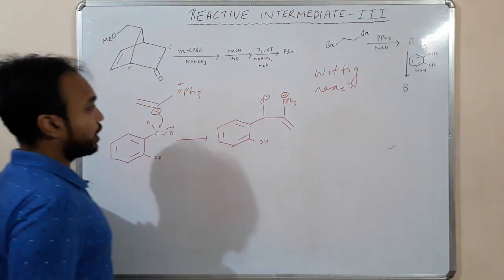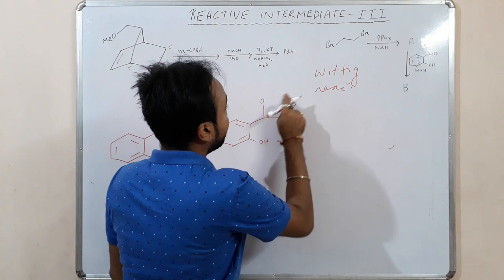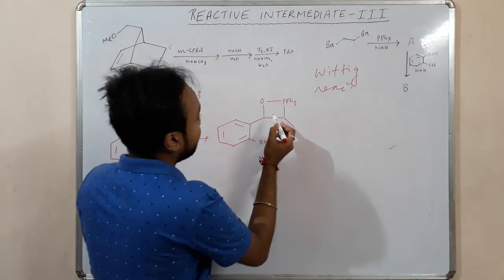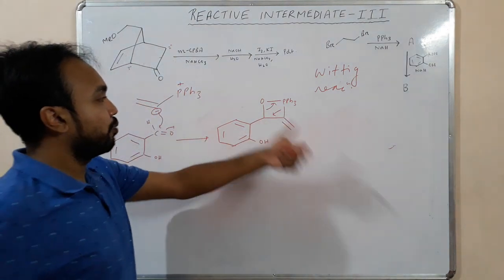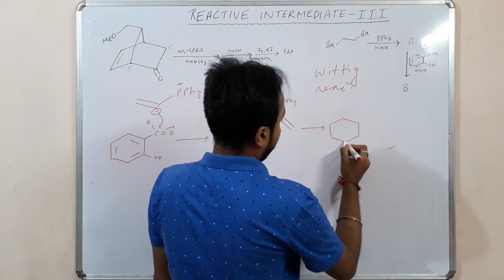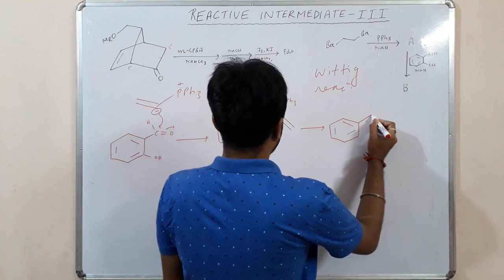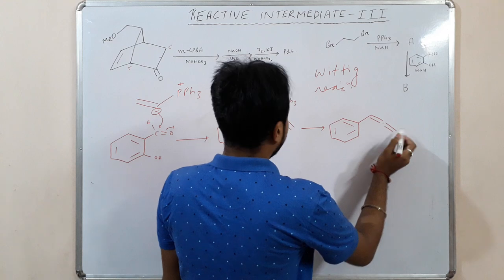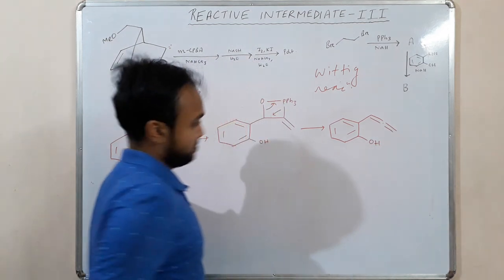Our phosphorus has a strong affinity for oxygen, so there will be a bond formation here. After the bond formation, what happens - PPOPh3 will leave. So what we are getting - we are getting a double bond and a double bond, like an allene system.